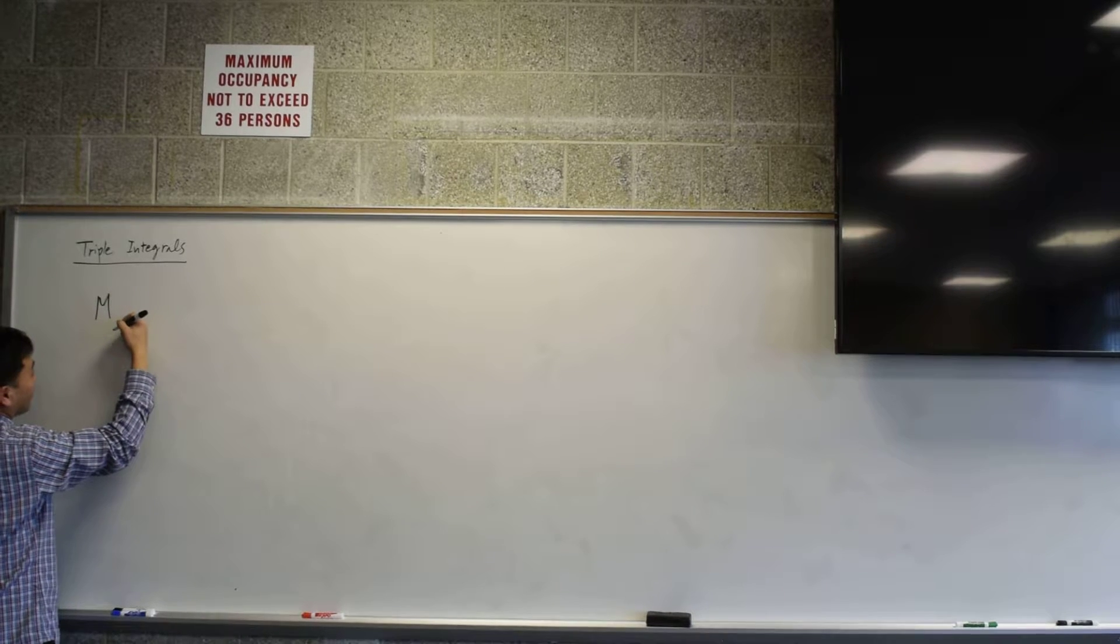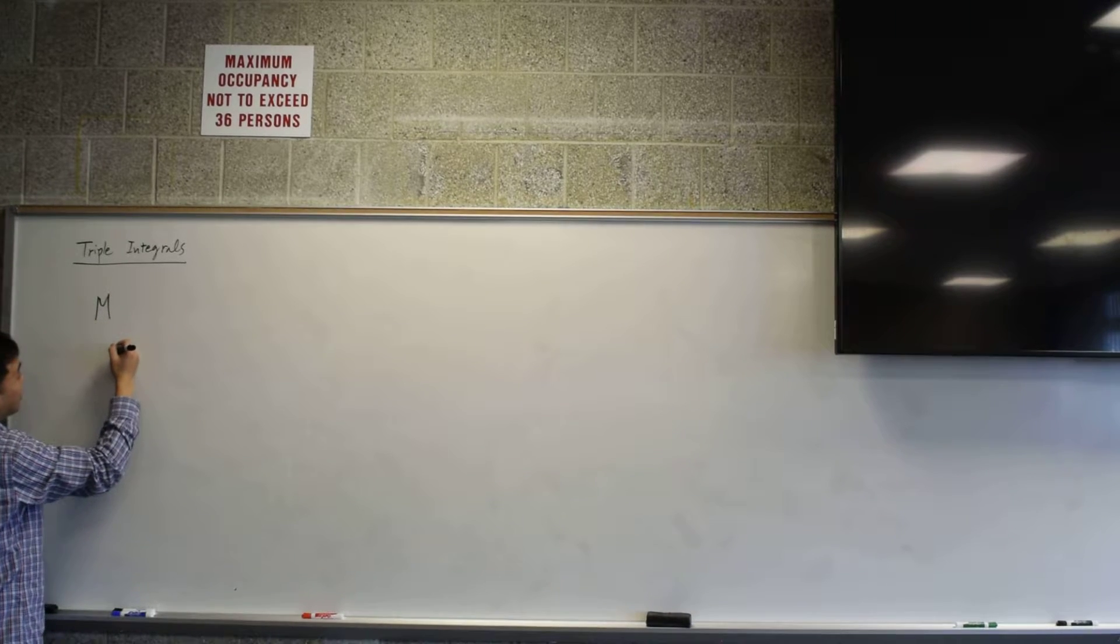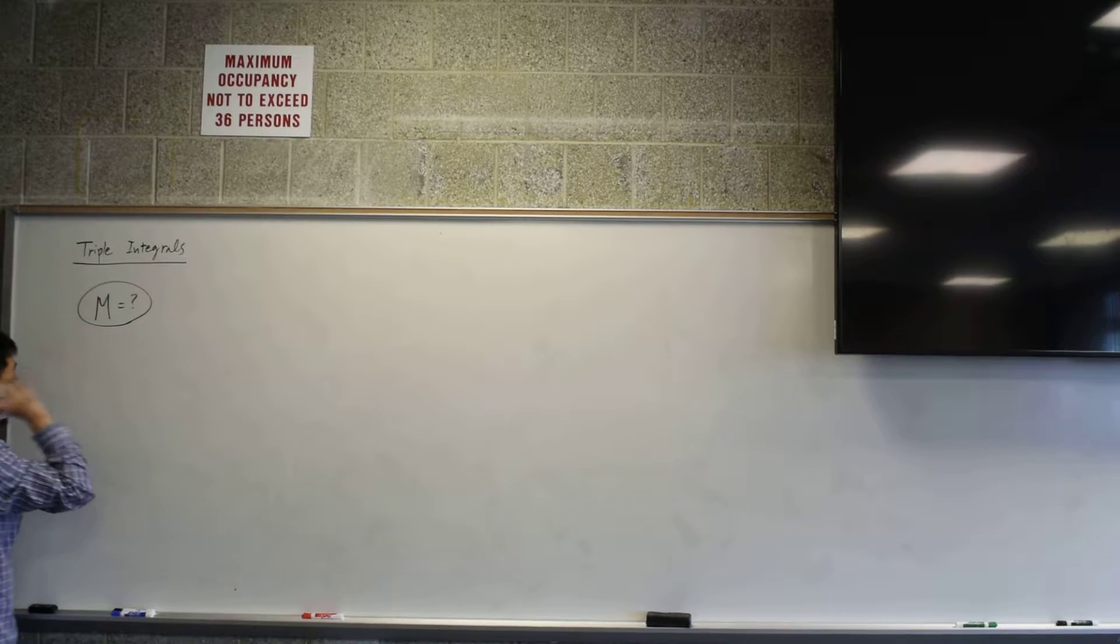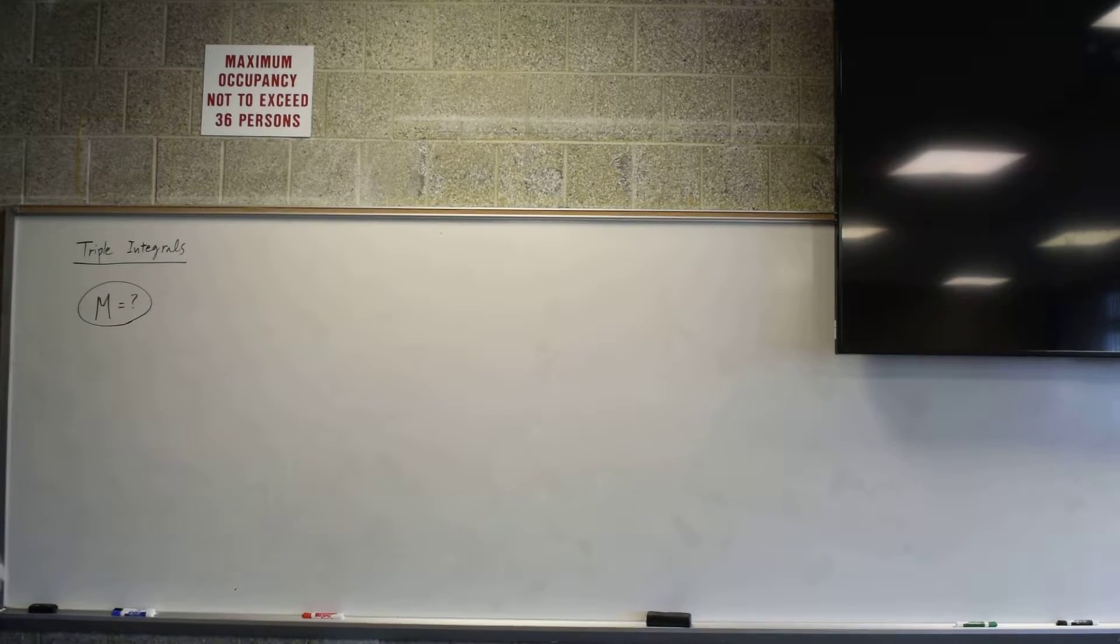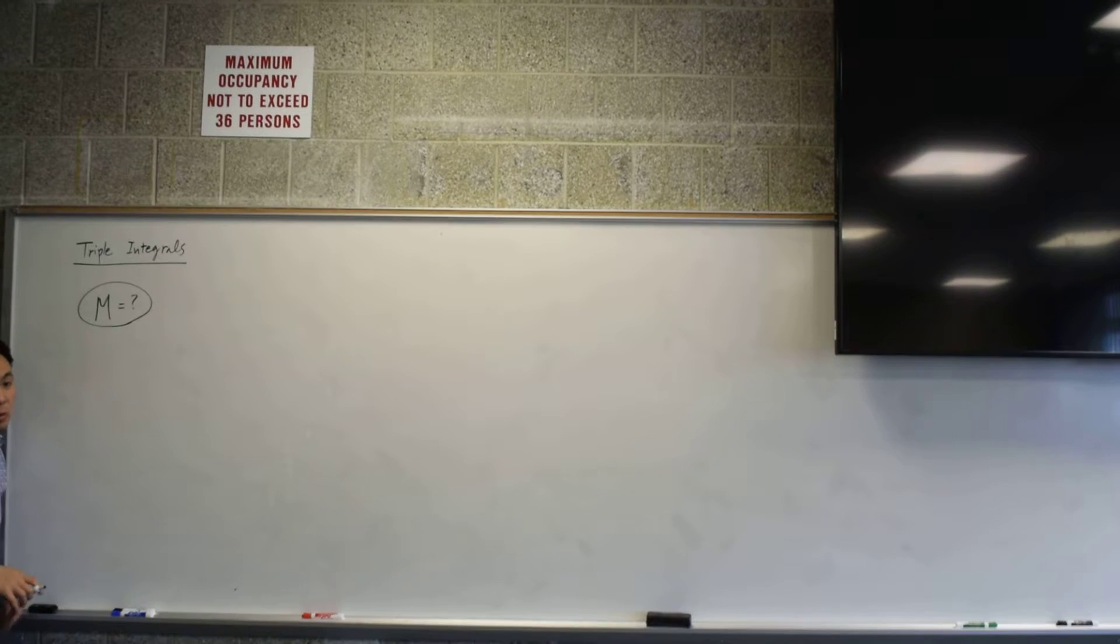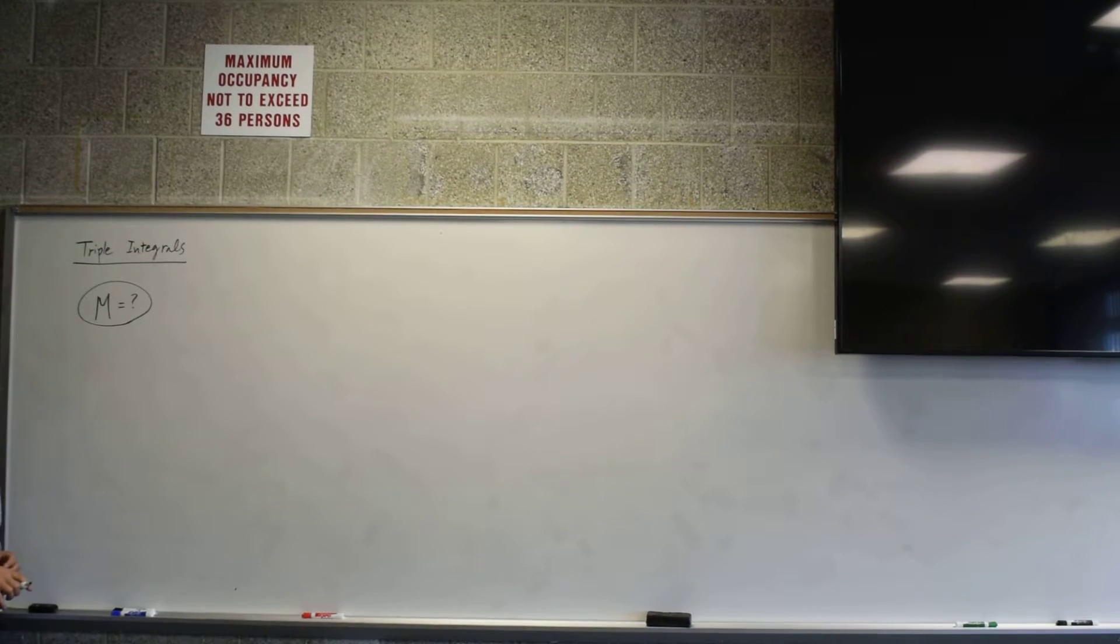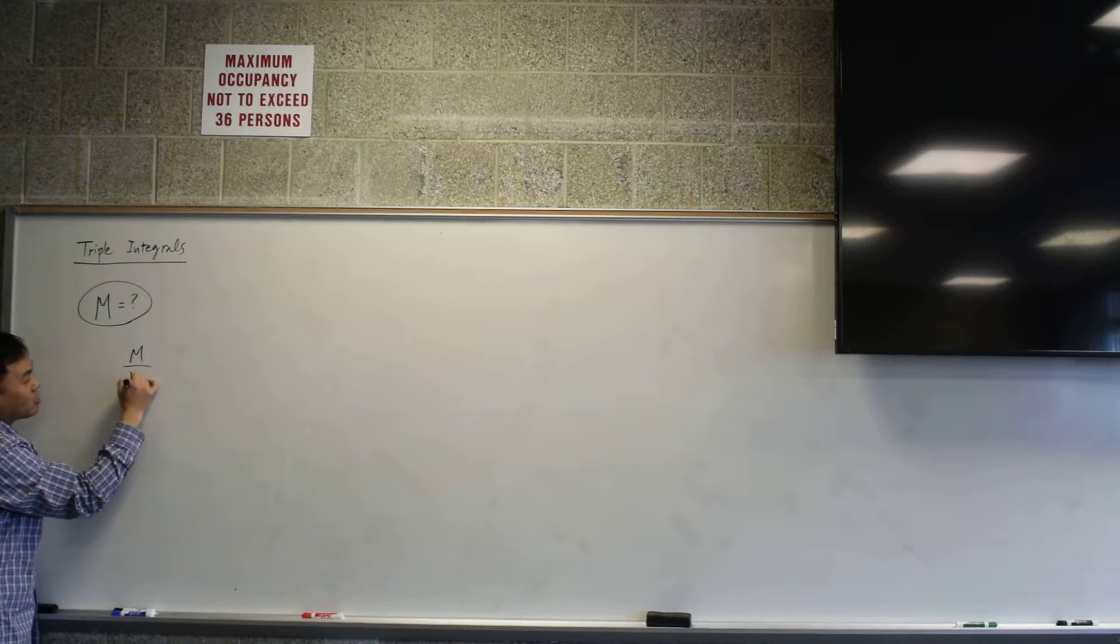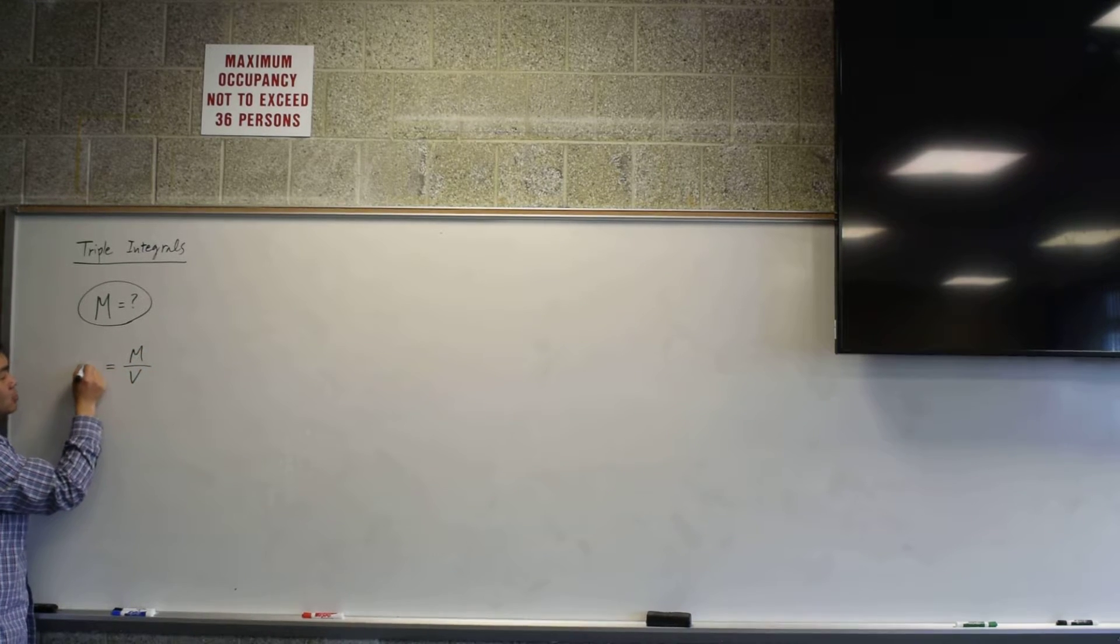One of the most basic ones is finding the mass. The way I'm going to approach this is by talking about density. Do you know what density is? Mass over volume. Mass over volume is called the density, and you put rho.